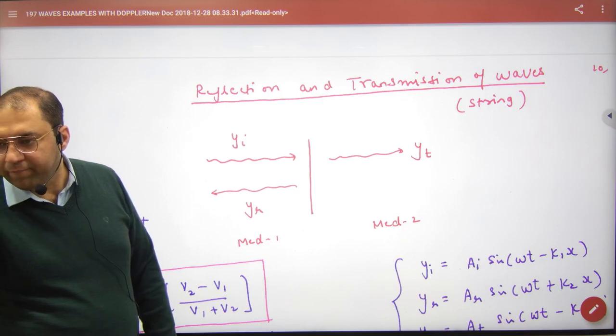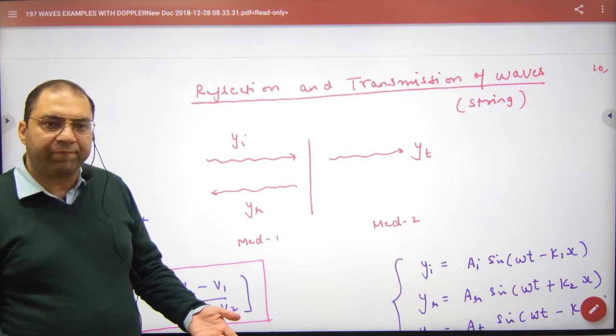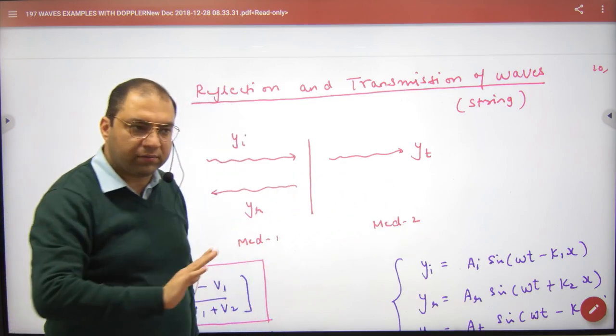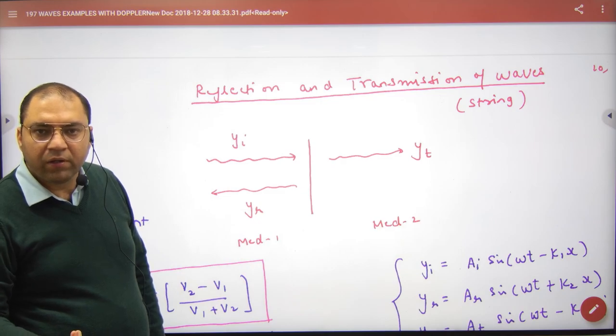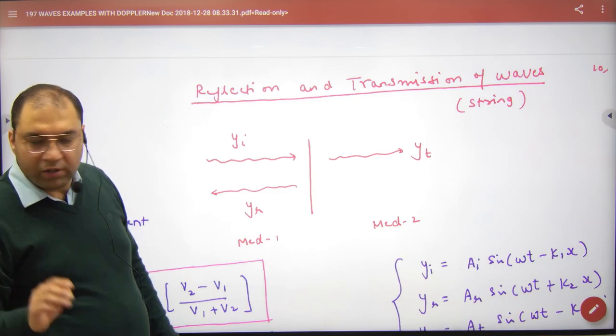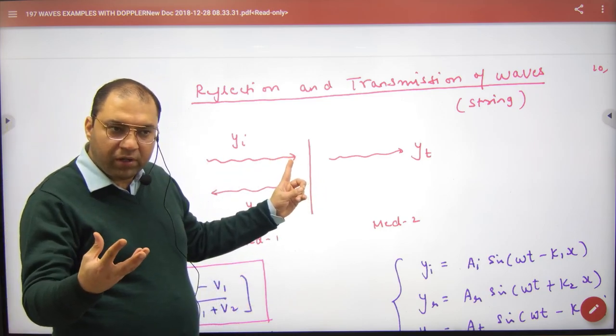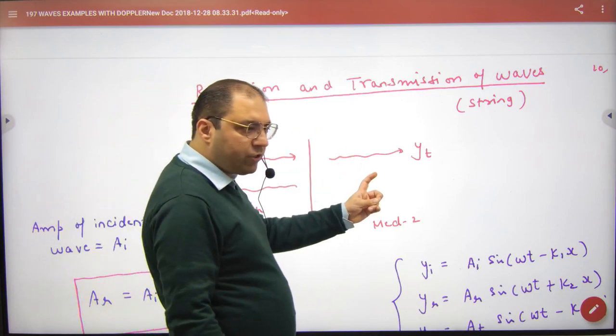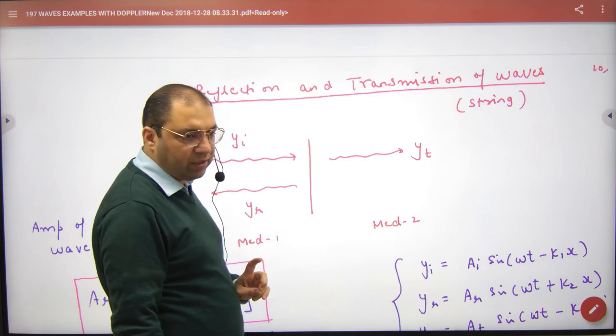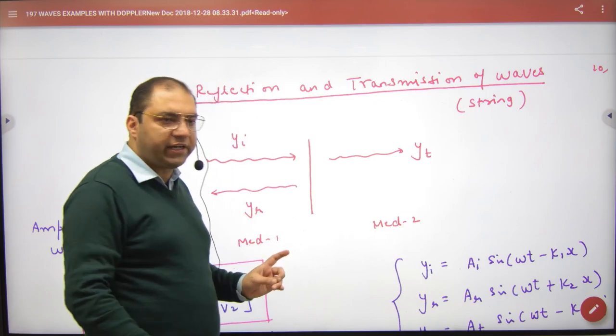First point clear? Medium is like this. Rarer to denser, this is also possible. Denser to rarer. Two mediums. This wave is called incident wave. This wave enters the other medium, which has some energy transmitted, which reflects back. The transmitted wave, the reflected wave.